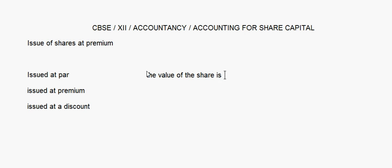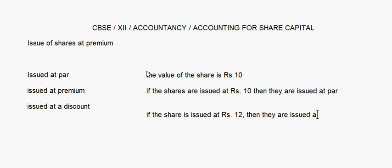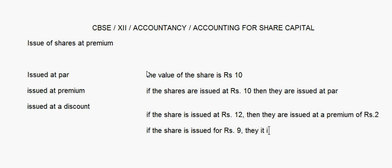Suppose the value of the share is rupees 10. Now if the shares are issued at rupees 10, then they are issued at par — that is the same value. If the share is issued at rupees 12, it means they are issued at a premium of rupees 2. And if the share is issued at rupees 9, then it is issued at a discount of rupee 1.